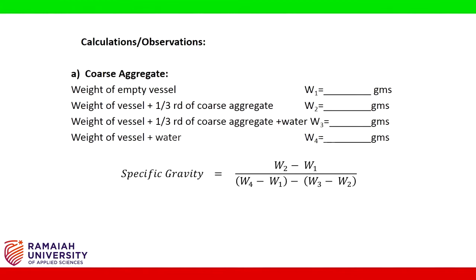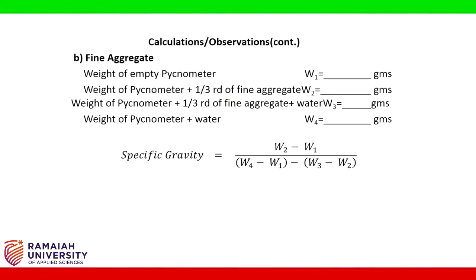Calculations and observations — Coarse aggregate: W1 = weight of empty vessel (grams); W2 = weight of vessel plus one third of coarse aggregate (grams); W3 = weight of vessel plus one third of coarse aggregate plus water (grams); W4 = weight of vessel plus water (grams). Specific gravity is calculated by the formula shown. Fine aggregate: W1 = weight of empty pycnometer; W2 = weight of pycnometer plus one third of fine aggregate; W3 = weight of pycnometer plus one third of fine aggregate plus water; W4 = weight of pycnometer plus water. Specific gravity is calculated by the formula.